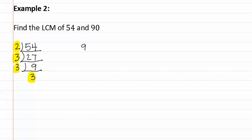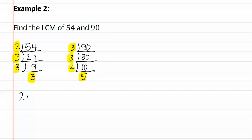Next, let's do the same with ninety. Three goes into ninety thirty times. Three goes into thirty ten times. Two goes into ten five times. Now let's write the prime factorization of each. For fifty-four, it is two times three to the third, because we have three threes. For ninety, we have two times three squared, because there are two threes, times five. Remember, when writing prime factorizations, you should always try to put the numbers in order.